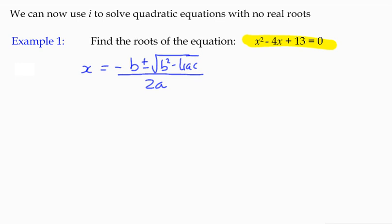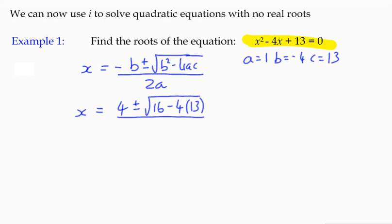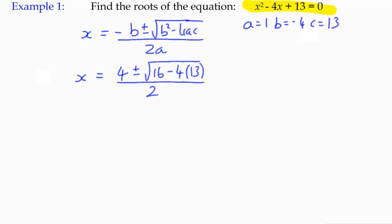Now that we've got a way of getting around this kind of can't have a negative number under the square root sign. a is 1, b is negative 4, and c is positive 13. So if I substitute these into the quadratic formula I end up with positive 4 (negative b becomes positive 4) plus or minus the square root of b squared becomes 16.